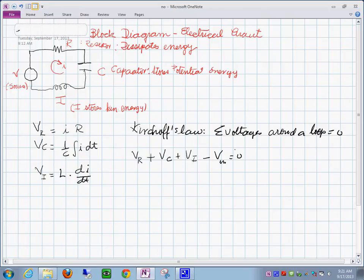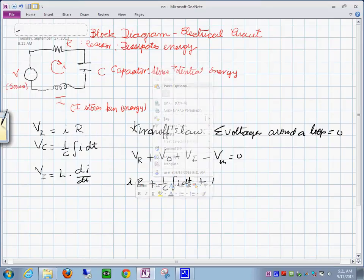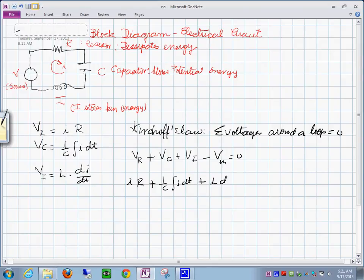So you could write this is I times R plus this would be 1 over C, the integral of I dt, plus this voltage here would be L times di dt. This is equal to the voltage in. This is the basic equation. But you see, it's not very convenient to work with this equation because this is all in terms of I and it has an integral and derivative and then the derivative of this.